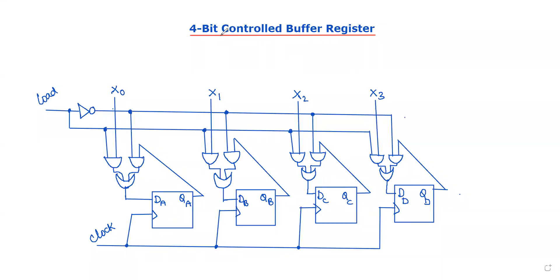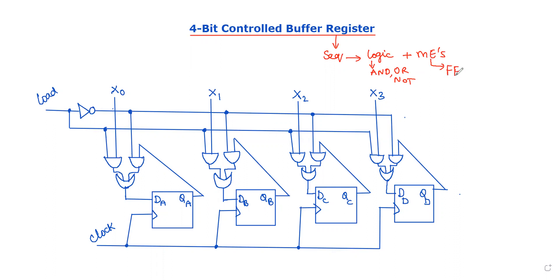In this video, I will explain about a 4-bit controlled buffer register. A register is a sequential circuit which is used to store binary data. A sequential circuit compulsorily uses two components: logic gates and memory elements. The basic logic gates are AND gate, OR gate, NOT gate, and other gates. The basic memory element is called a flip-flop. A flip-flop is a single-bit storage element — it stores one bit at a time, which is why it is considered a memory element.